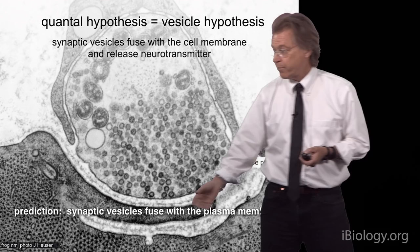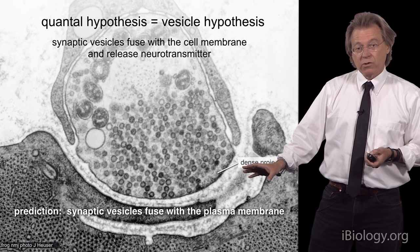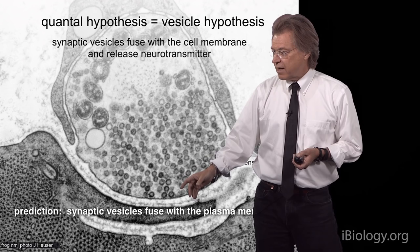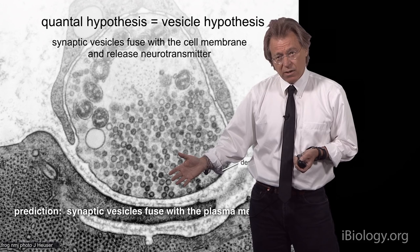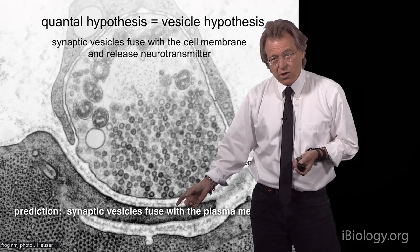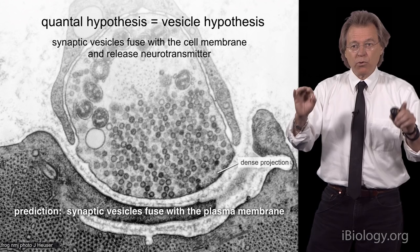Returning to the quantal hypothesis: Katz understood that what he needed to demonstrate was that these synaptic vesicles fused with the plasma membrane, and at the time that was not widely accepted. People imagined that neurotransmitter was being released directly through the plasma membrane, not via these synaptic vesicles. To prove the vesicle hypothesis, Katz needed to demonstrate that these vesicles fused with the membrane, and that had never been seen before.